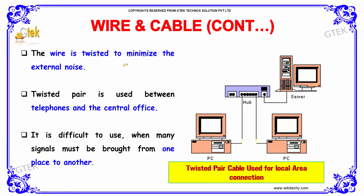The wire is twisted to minimize external noise. Twisted pair is used between telephones and the central office. It is difficult to use when many signals must be brought from one place to another.